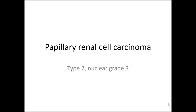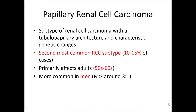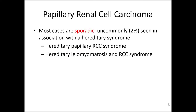If you were to use a nuclear grading system for that particular case, it would be nuclear grade 3. Papillary renal cell carcinoma is the second most common subtype of renal cell carcinoma, representing around 10–15% of cases. Similar to clear cell RCC, it predominantly affects adults and is more common in men. Most cases are sporadic, but there are two hereditary syndromes to know: hereditary papillary RCC syndrome, and hereditary leiomyomatosis and RCC syndrome.